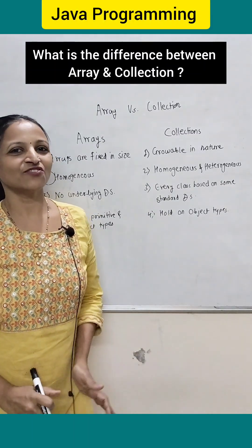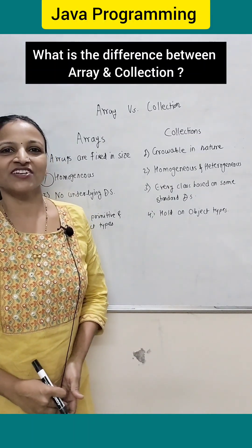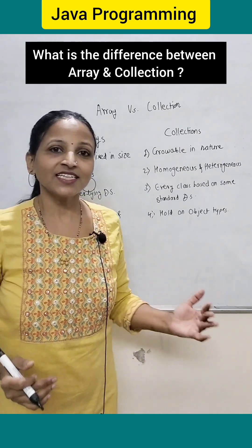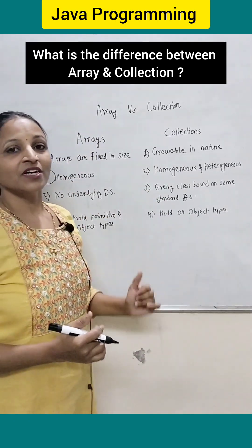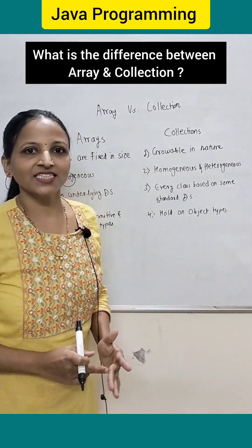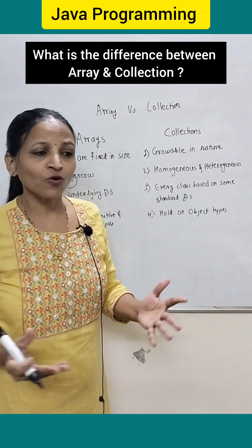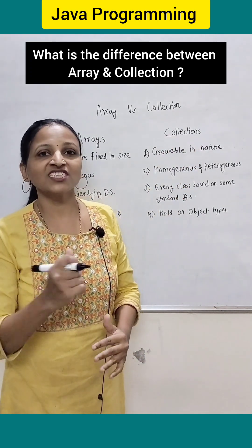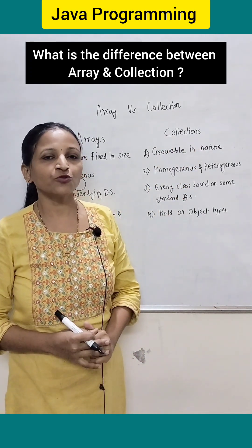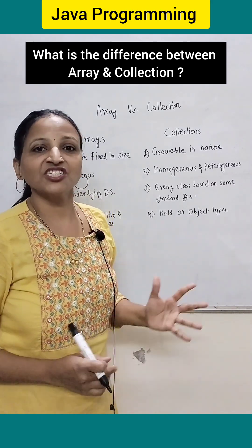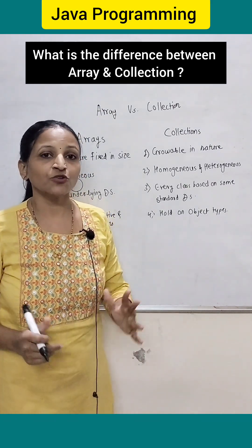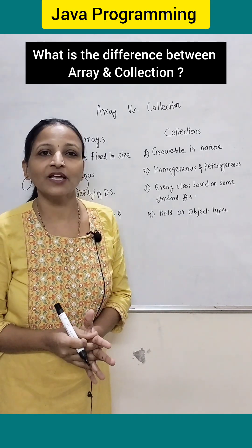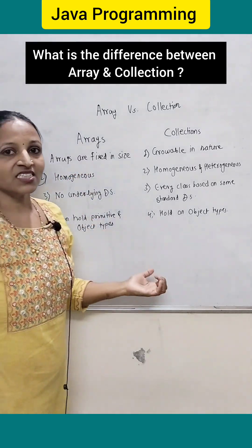Hello students, here is one more important question in Java: what is the difference between arrays and collections? An array is a derived data type present in Java that can hold homogeneous data. The collection framework was introduced in JDK 1.2, is present in the java.util package, and is used for grouping together multiple objects.